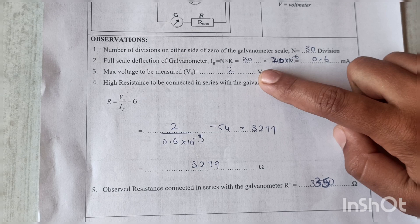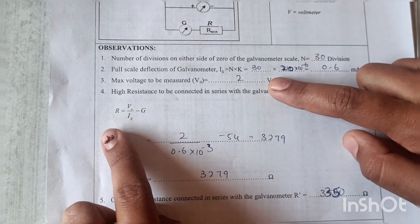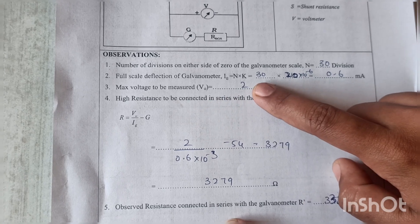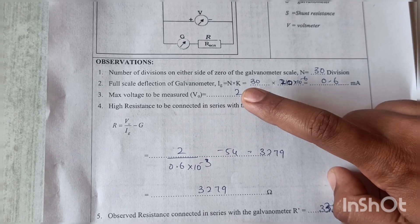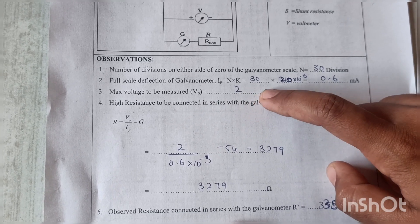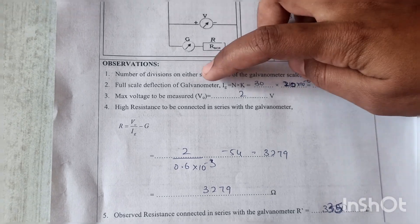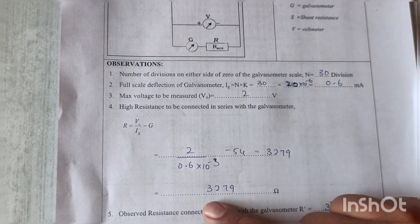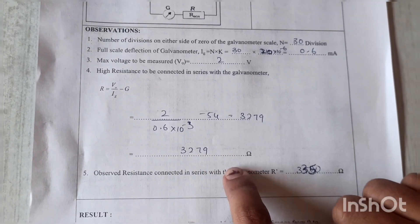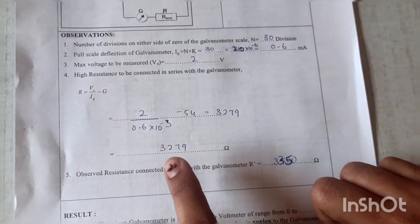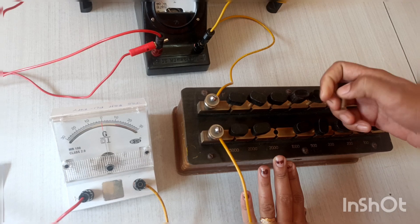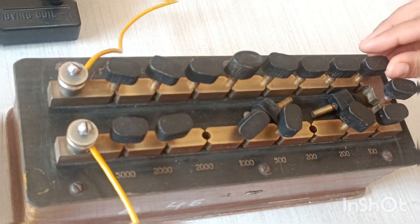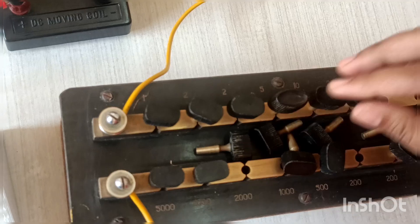Using the given values, first you have to calculate the theoretical R value. In this, V0 value is 2 volt. It may change to 1, 1.5, to 2.5 also. Here I am considering 2 volt. Using this 2 volt, calculate the resistance value as 3279 ohms.